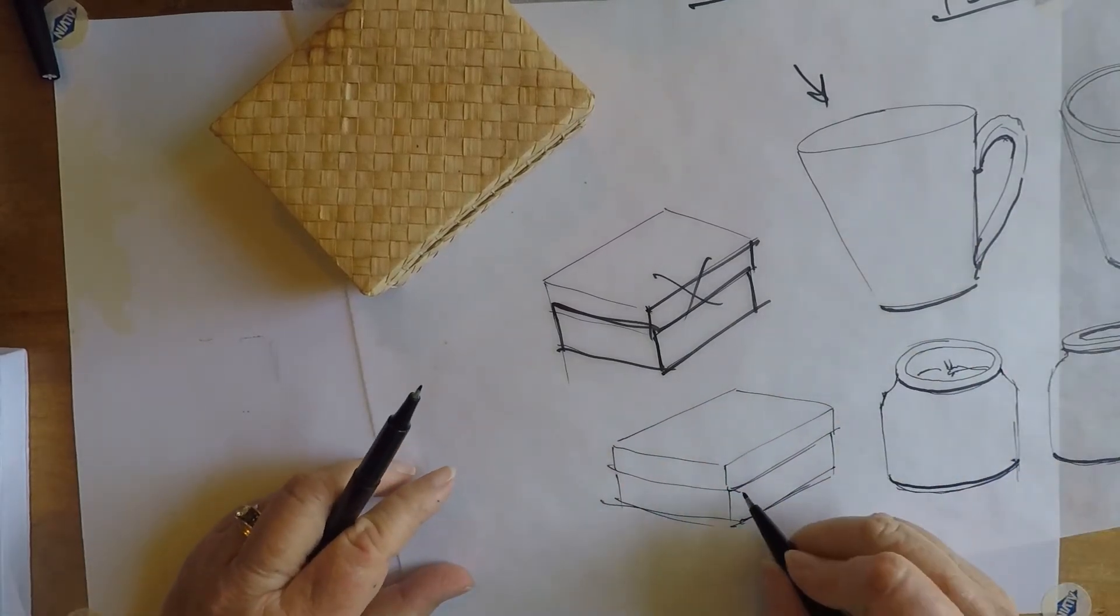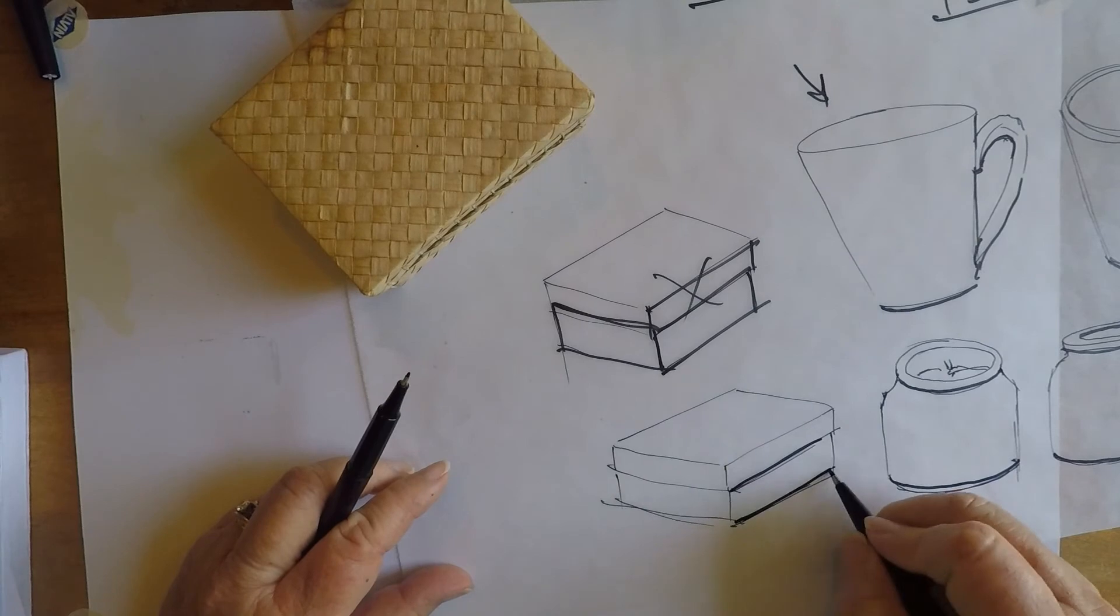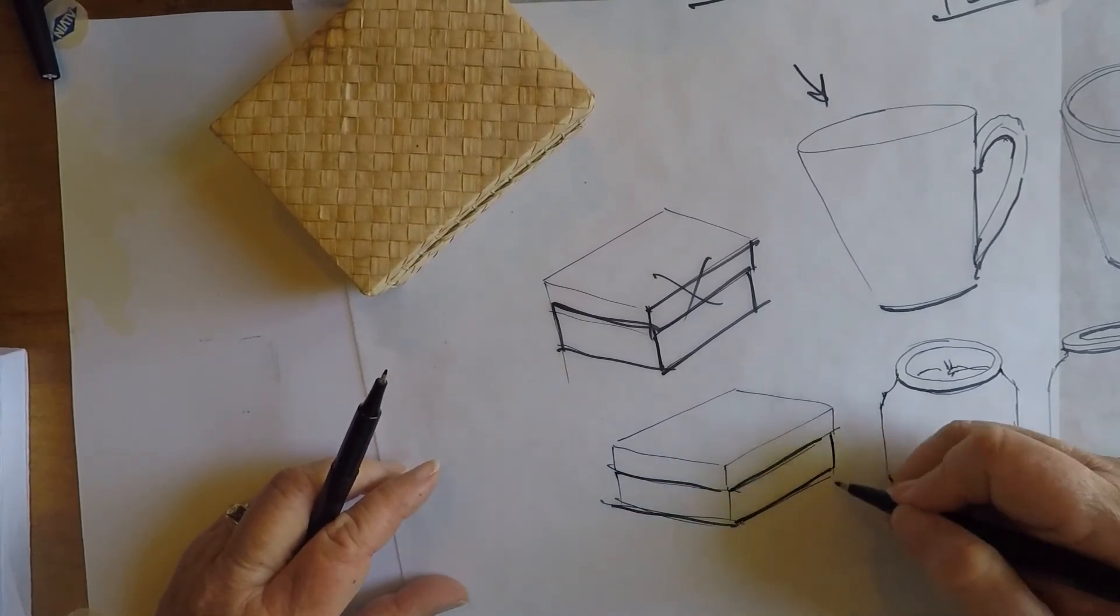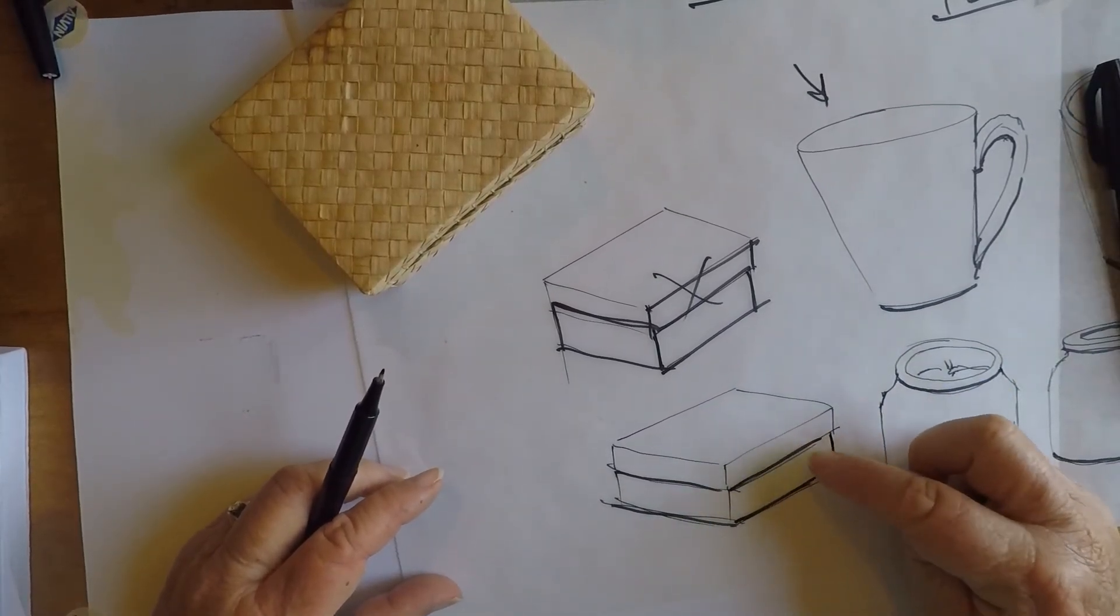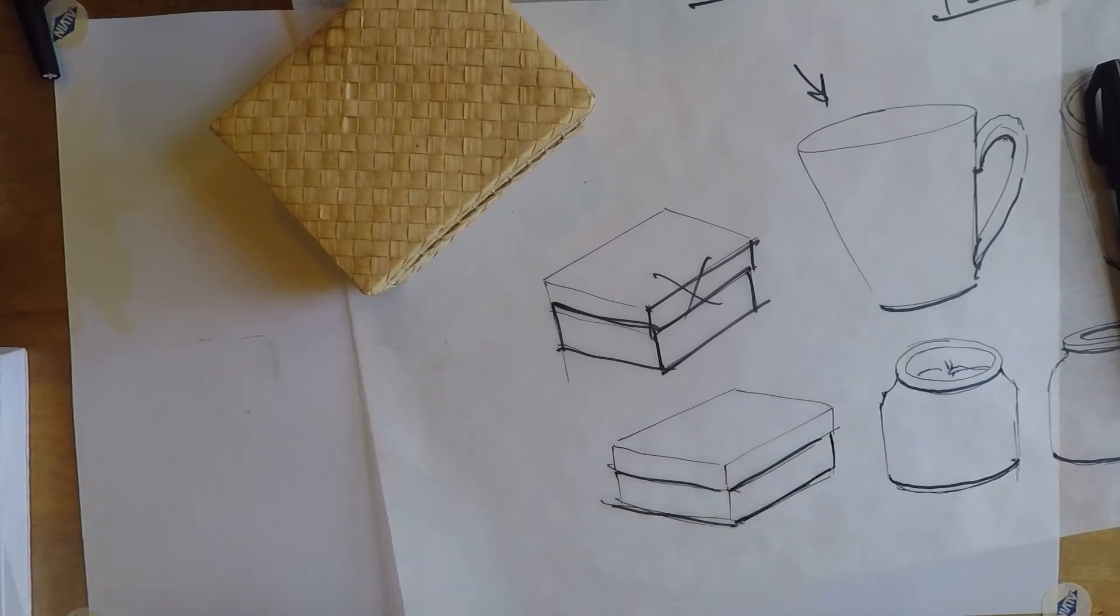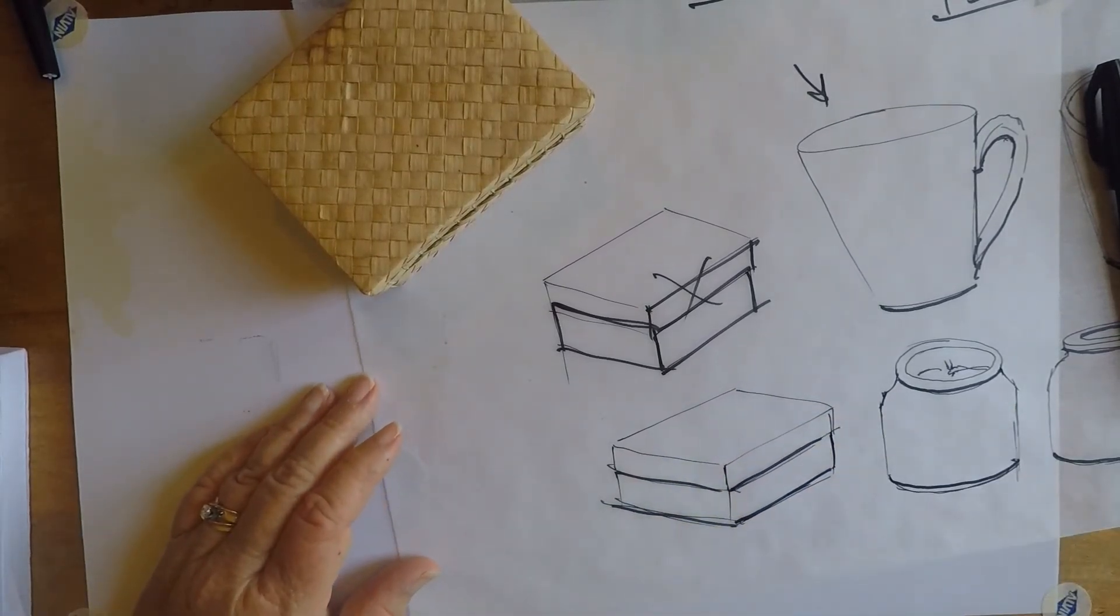Okay, and then I'm going to reinforce. Okay, so you're trying to get the sense that the top of the box is overlapping the side.